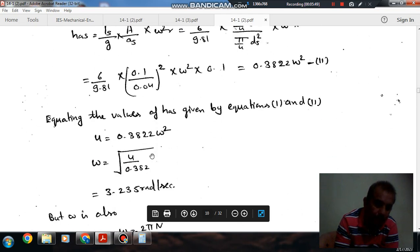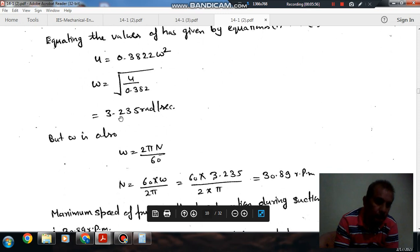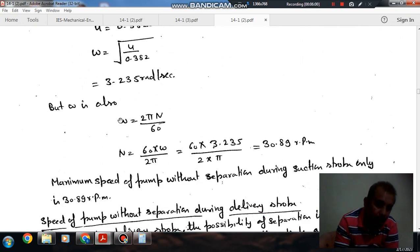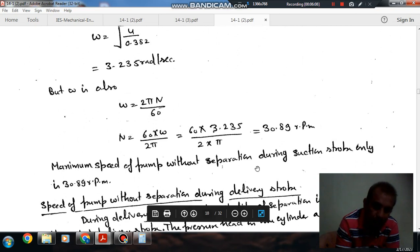So omega is 3.235 rad/s, and in RPM it will be 30.89. So this is the maximum speed without separation during the suction stroke.